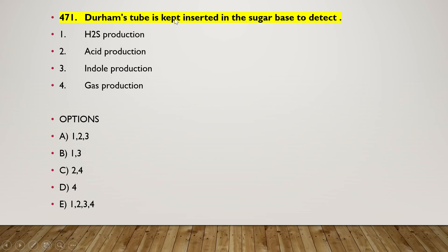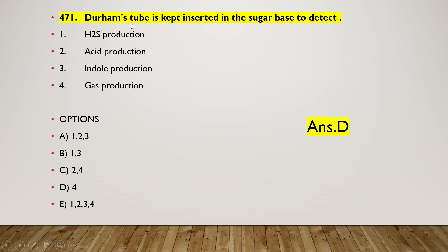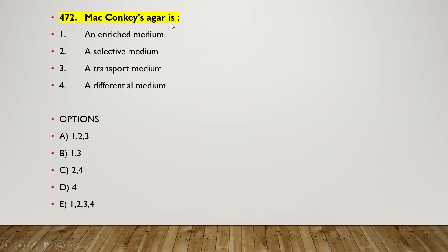The next question: Durham's tube is kept inserted in sugar base to detect — H₂S production, acid production, indole production, or acid-gas production. The right answer is option D — four — gas production is detected using Durham's tube.